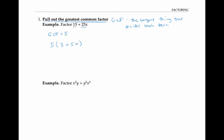Pause the video and see if you can find the greatest common factor of x squared y and y squared x cubed. The biggest thing that divides both x squared y and y squared x cubed is going to be x squared times y. One way to find this is to look for the power of x that's smallest in each of these terms — that's x squared — and the power of y that's smallest is just y to the one, or y.